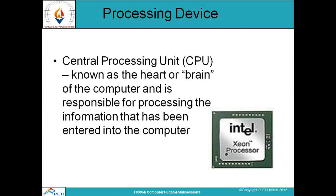The processing device — the main part of a computer — is called the CPU, the brain or heart of the computer. It is responsible for processing information that has been entered into the computer and performing calculations. So the CPU is actually the brain of a computer.